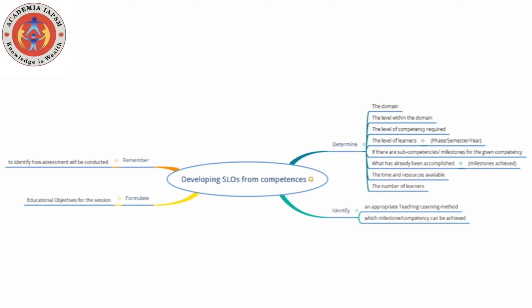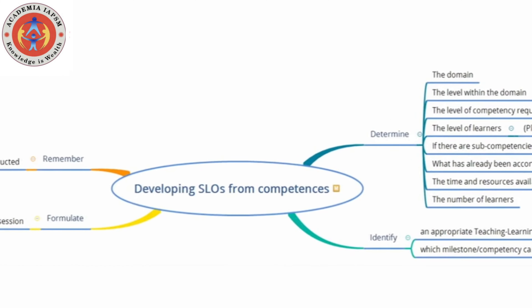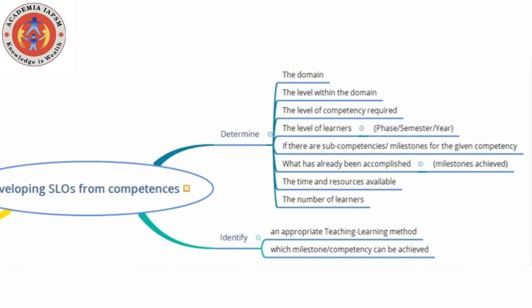Especially those who have completed the Curriculum Implementation Support Program, or CISP. The first thing you need to do is to determine the domain you are dealing with: is it the cognitive domain, the affective domain, or the psychomotor domain? And within the domain, what level is the competency targeting?